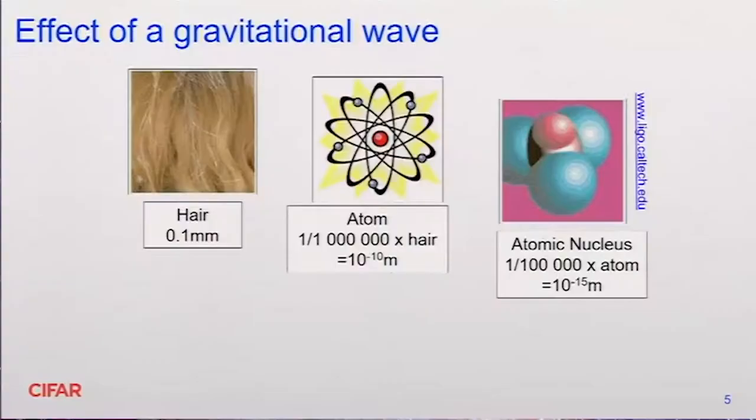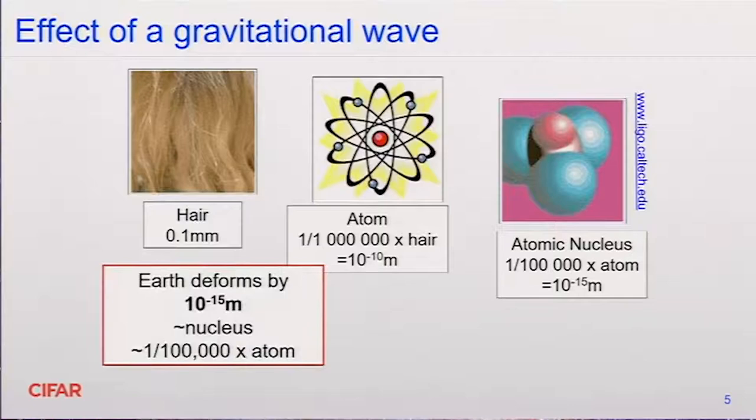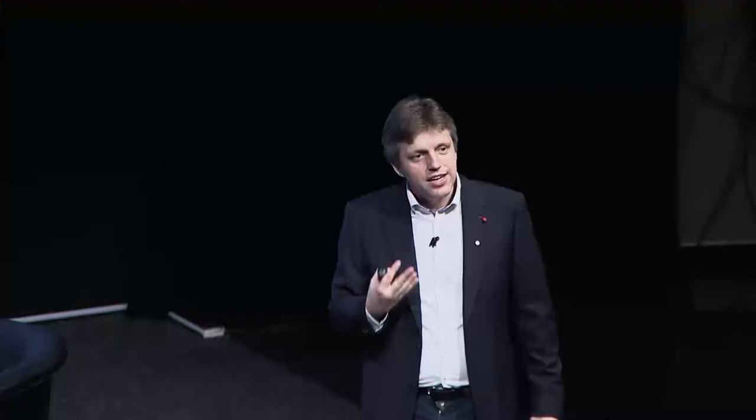So when gravitational waves hit Earth — the strongest ones there are — they deform the Earth by roughly the size of a nucleus. The instruments with which we are trying to detect gravitational waves are smaller than the Earth, so the deformations within the instruments are smaller still. We are talking about a change in length of about one-thousandth times the size of an atomic nucleus, or one hundred-millionth of the size of an atom. It's utterly astoundingly small effects we need to measure in order to detect those amazingly large and violent explosions.